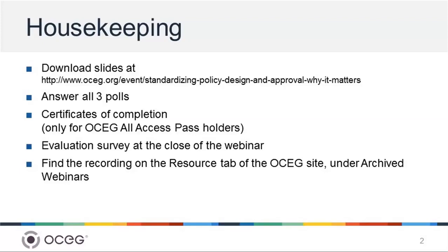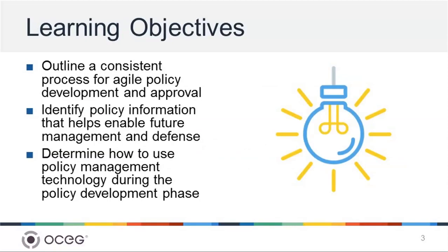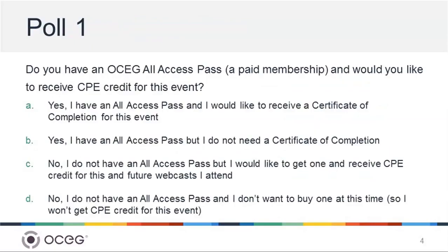Today we will address the following learning objectives: we will understand the key roles of policy author, subject matter expert, and policy owner; identify appropriate approval steps and policy governance benefits; and review best practices for style guides and templates. Before we hand over the presentation to our speakers, we'd like to offer our first poll. Please be sure to answer this poll if you are interested in receiving CPE credit for this event.